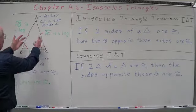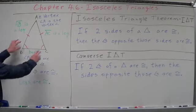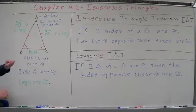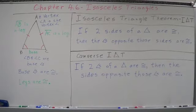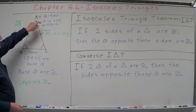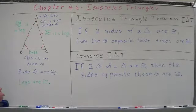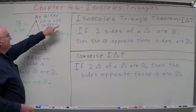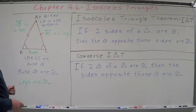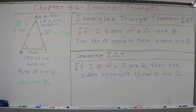An isosceles triangle is basically a triangle that has at least two sides congruent — at least two sides, meaning it can have three sides congruent. We're going to look at the situation where at least two sides are congruent. Pick two of them to be the legs and the other one to be the base. We have triangle ABC. Point A is what we call the vertex, and angle A is the vertex angle.